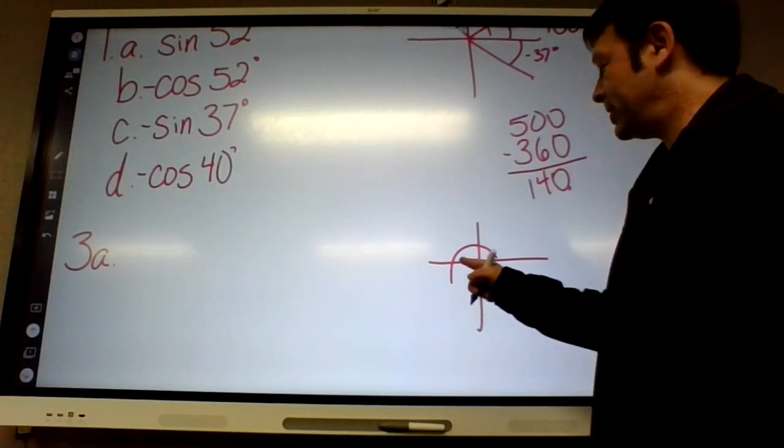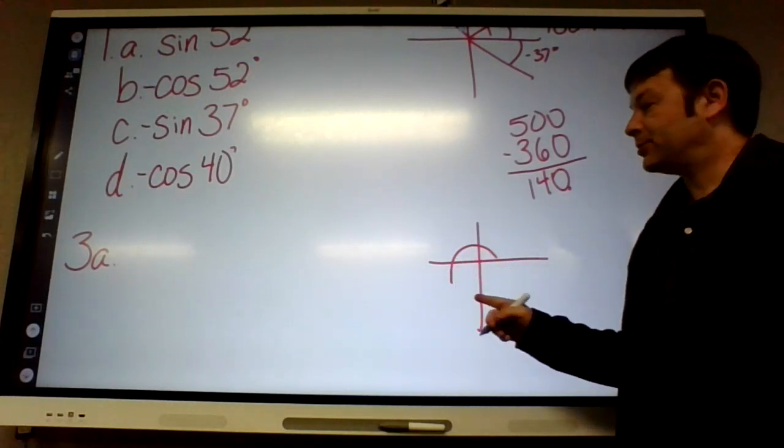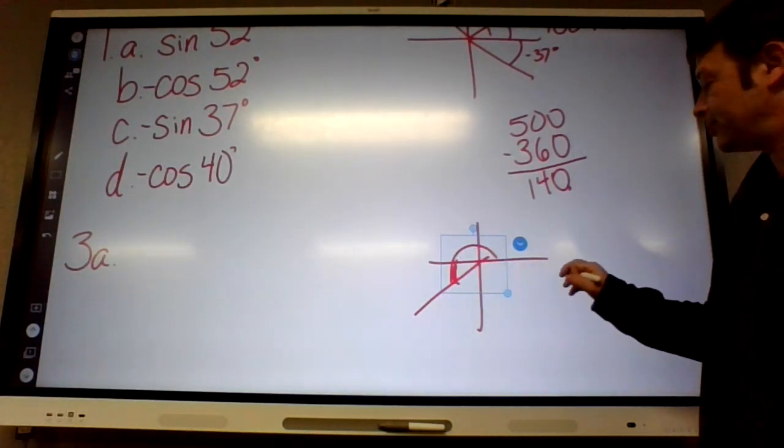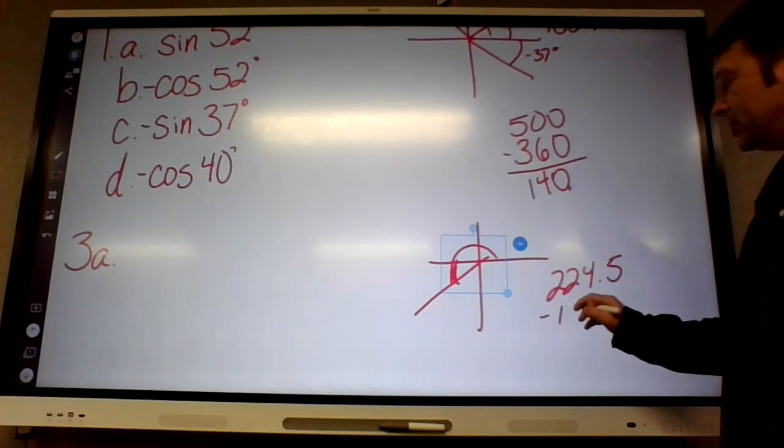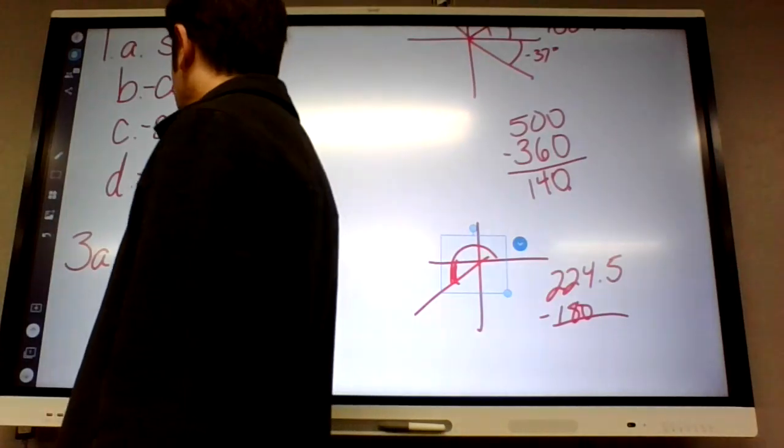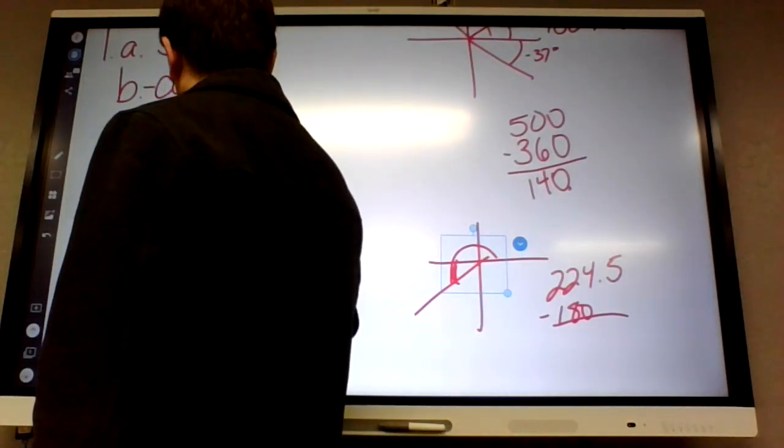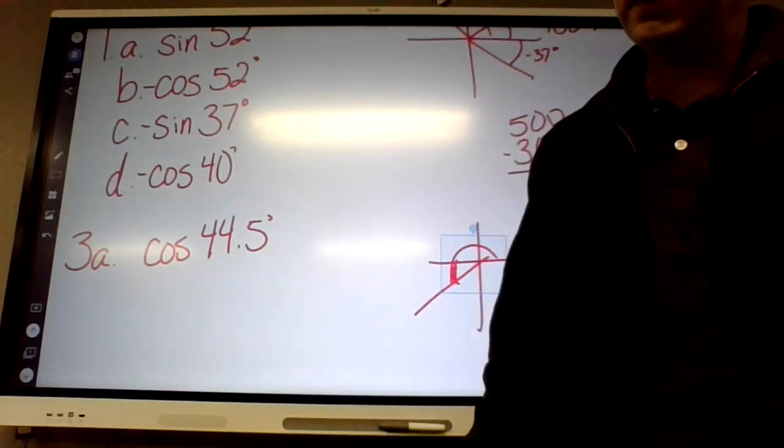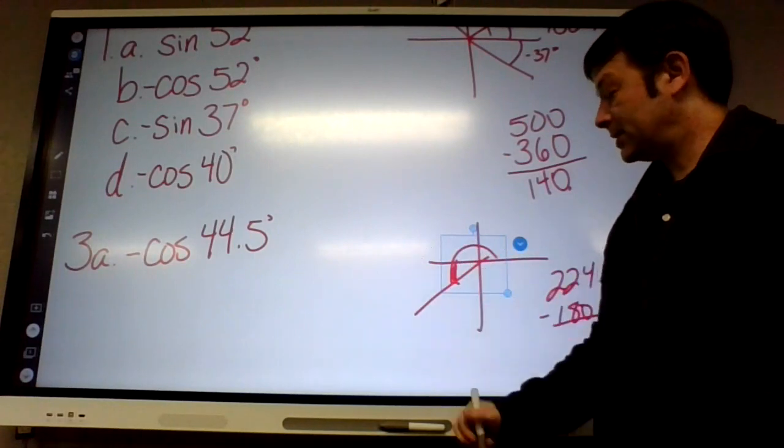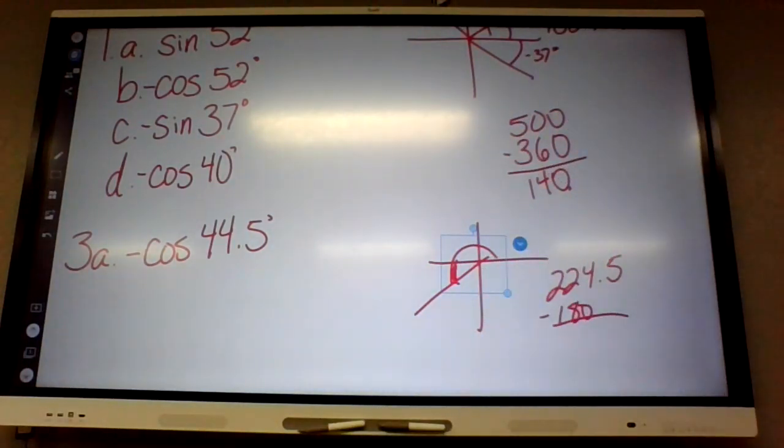Okay, cosine 224.5. You guys know what quadrant 224.5 is in? The third quadrant. There, past 180, not to 270, somewhere over here. So we need to figure out how far is it from 180. That would be the reference angle right there. So 224.5 minus 180 is 44.5. Is cosine positive or negative in the third quadrant? Negative, to the left it's negative.